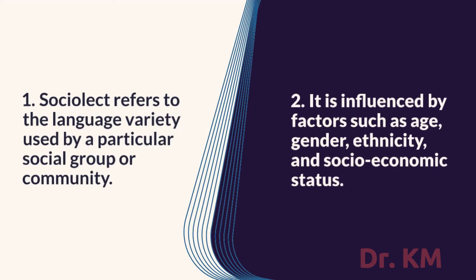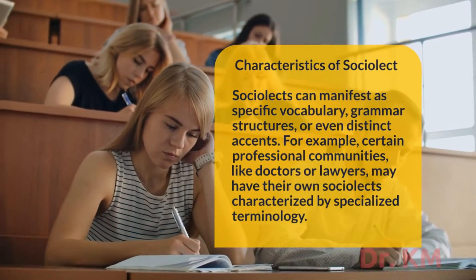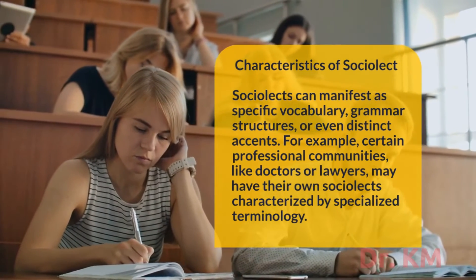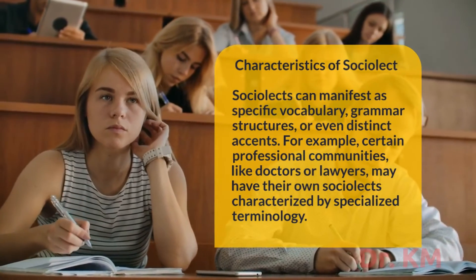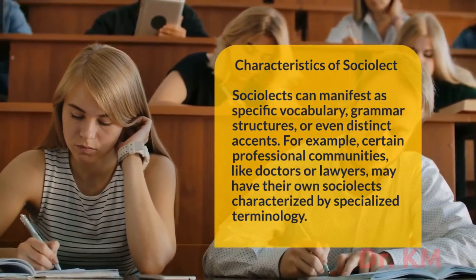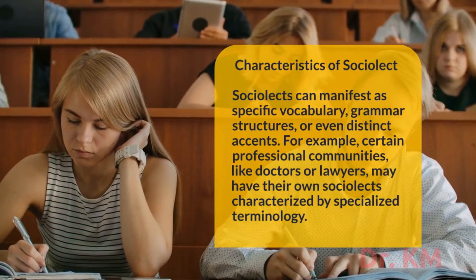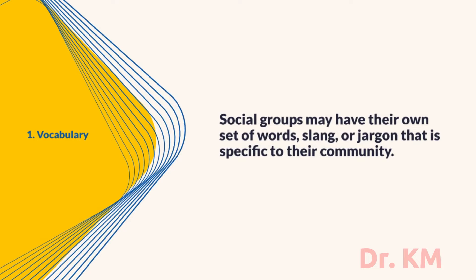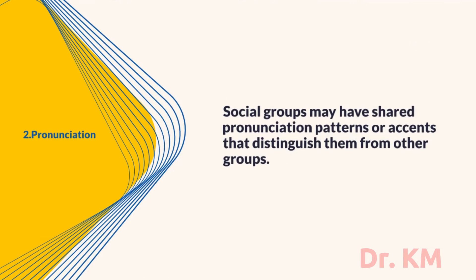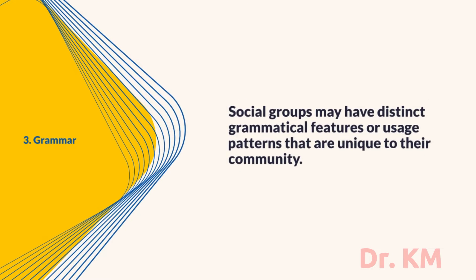Sociolect refers to the language variety used by a particular social group or community. It is influenced by factors such as age, gender, ethnicity, and socioeconomic status. Sociolects can manifest as specific vocabulary, grammar structures, or even distinct accents. For example, certain professional communities like doctors or lawyers may have their own sociolects characterized by specialized terminology. Social groups may have their own set of words, slang, or jargon, shared pronunciation patterns, and distinct grammatical features unique to their community.